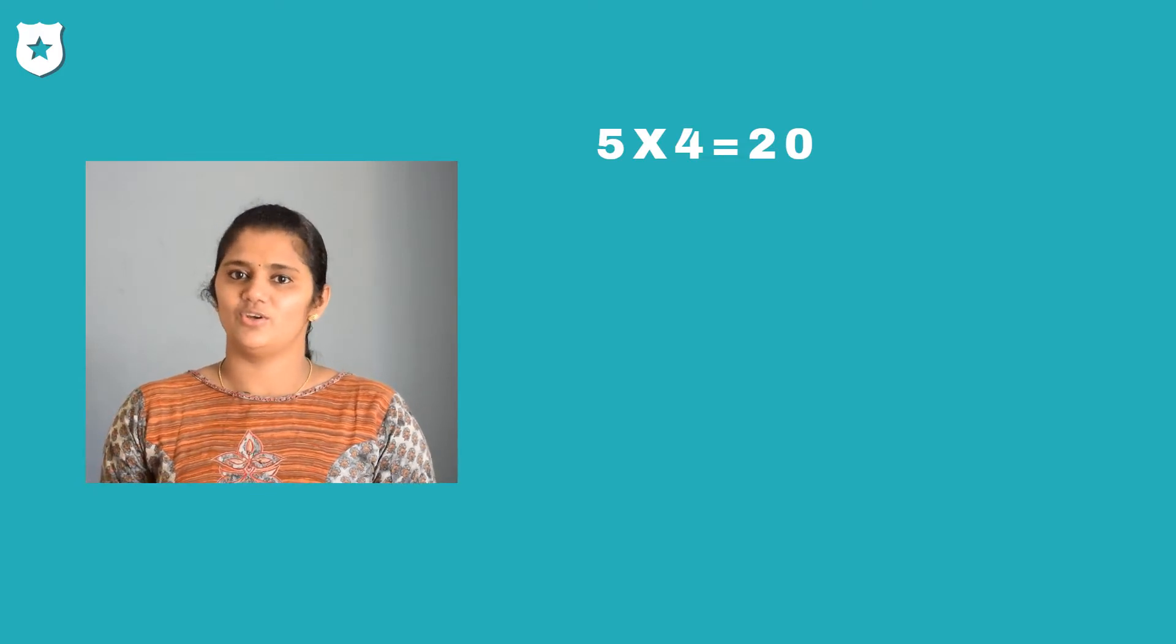When two or more numbers are multiplied, then each one of the numbers are called factors of the product and the product is the multiple of each one of the numbers. 5 times 4 equals 20.